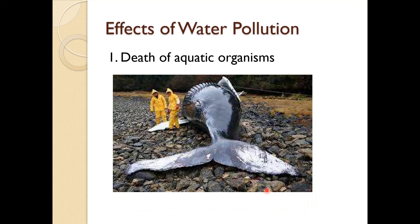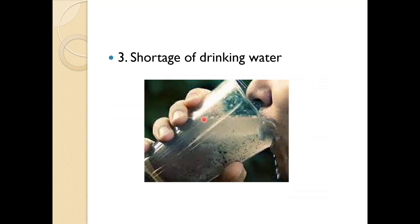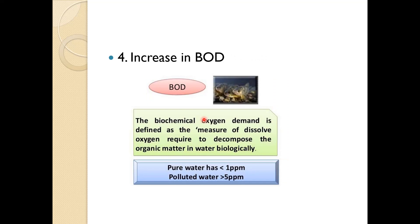So, what are the effects of water pollution? First is the death of aquatic organisms. Because of less oxygen supply from the oil industry, even large animals cannot survive. Then rivers are changed into dustbins — you can see plastic flowing in rivers. Because of pollution there will be a shortage of drinking water, as we cannot drink polluted water.